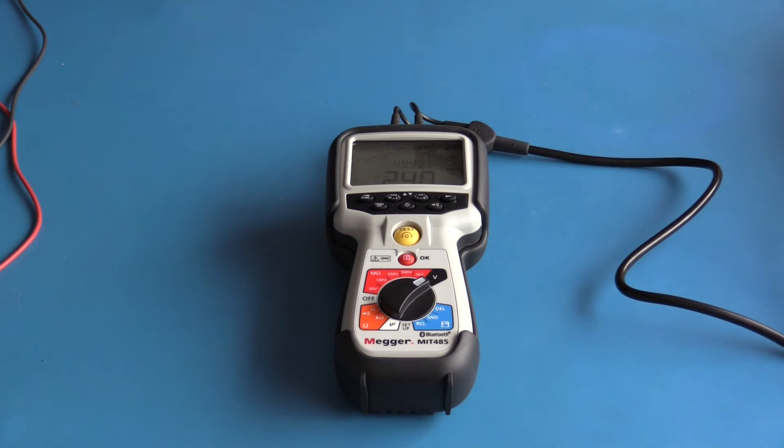The final function I'm going to demonstrate today is the voltage measurement function. I have this meter plugged into a 240 volt receptacle. It's reading 240 volts with a line frequency of 49.9 hertz.